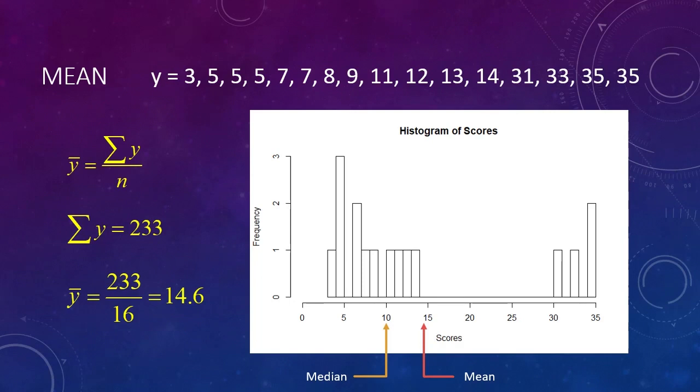Sometimes we're interested in the center of gravity, even if it is influenced by extreme scores. In that case, we want to use the mean. Sometimes there are no extreme scores in our data, in which case both the mean and the median are fine measures of center and will have values close to one another. In a perfectly symmetrical distribution, the median and mean are the same.